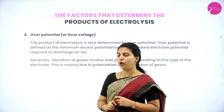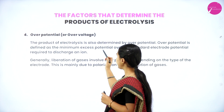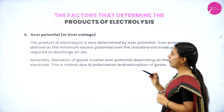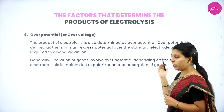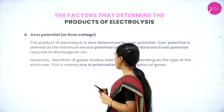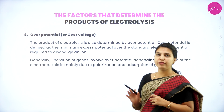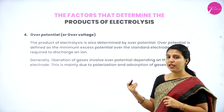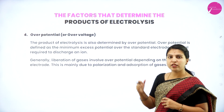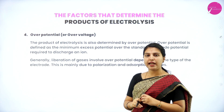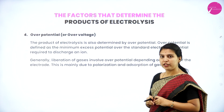Factor 4: Over potential or over voltage. The products of electrolysis also depend on over voltage. Over potential is defined as the minimum excess potential over the standard electrode potential required to discharge an ion. Liberation of gases generally involves over potential depending on the type of electrode, mainly due to the polarization and adsorption of gases. These are the four major factors which affect the products of electrolysis.